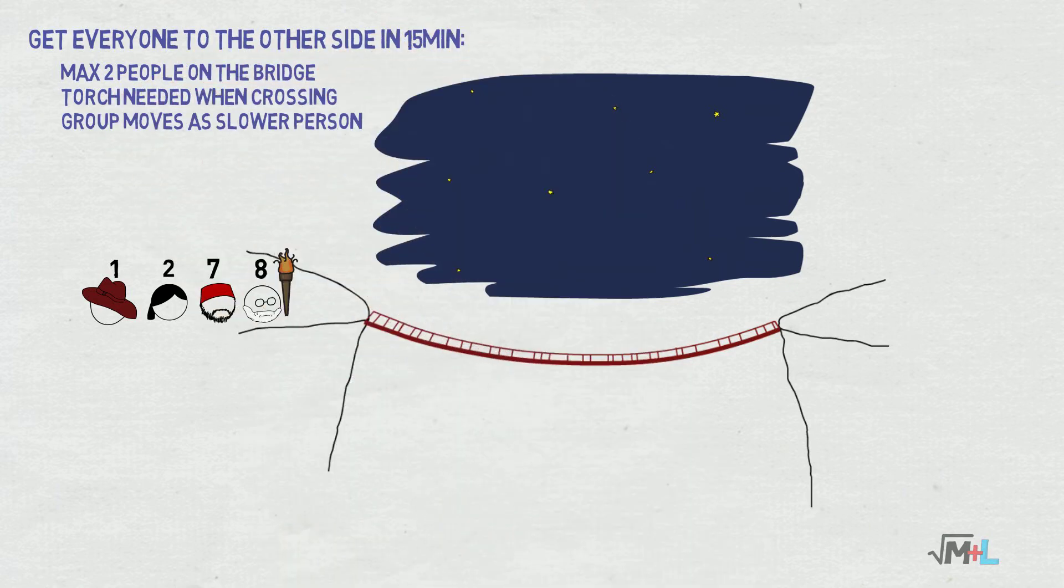So how should they plan the crossing to make it safely to the other side in 15 minutes? Pause the video now and take your time because in five seconds the solution will be revealed. Three, two, one, solution.